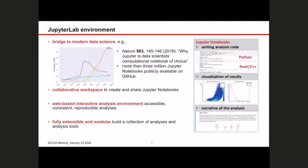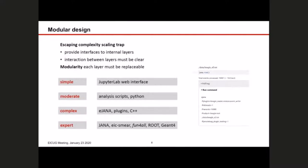A concern is: does this hide complexity? Not the way this is designed. The interfaces between all internal layers are well defined, so one can replace one layer without replacing the whole structure. For instance, you can get access not only to the full logs of the program, but also the full run command. So instead of just pressing a run button in a Jupyter notebook, you have the full command which you could also use on the command line. You can switch easily between all of these layers.